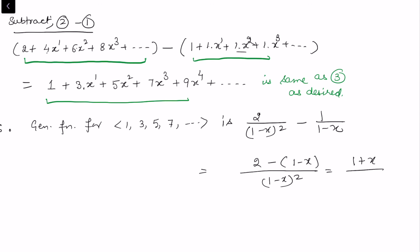This simplifies to (2 - 1 + x)/(1 - x²) = (1 + x)/(1 - x²). So the generating function for the sequence of odd numbers is (1 + x)/(1 - x²).